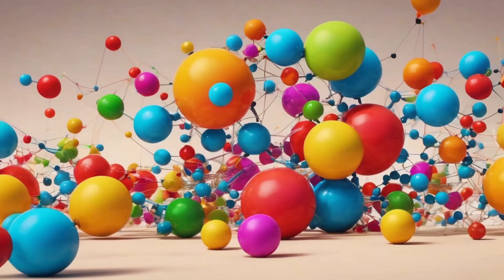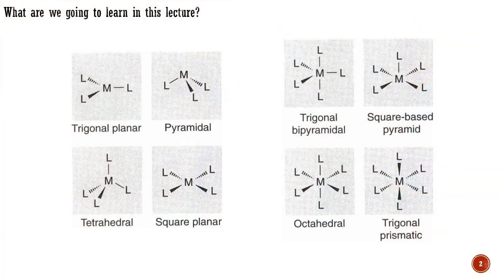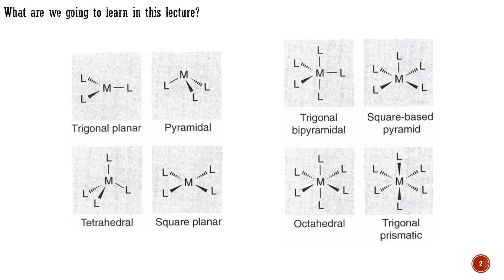Greetings to all, and a warm welcome to the concluding lecture of the introductory module dedicated to the structure and bonding in organometallic compounds. Here, our primary focus will be on understanding the relationship between coordination numbers, d-configurations, and the geometries of transition metal complexes.